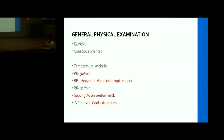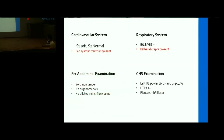On examination: conscious, oriented, afebrile, low BP on inotropic support at the time of arrival in EMOPD. SpO2 was 92% on Venturi mask. JVP was raised with cool extremities. On systemic examination: S1 with a pansystolic murmur was present. Bilateral basal crepitations on respiratory examination. CNS: left upper limb weakness with power 4/5 and hand grip of 40%.